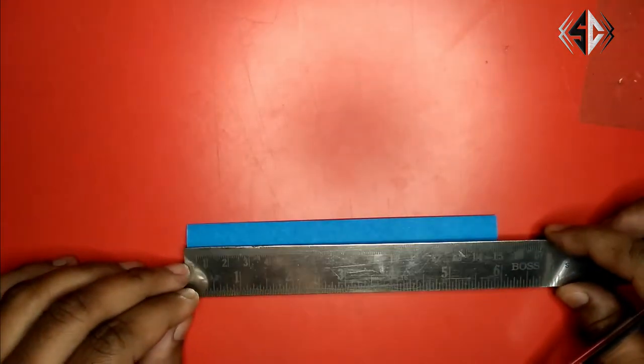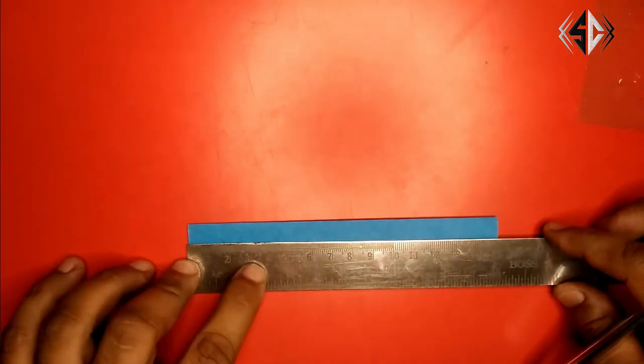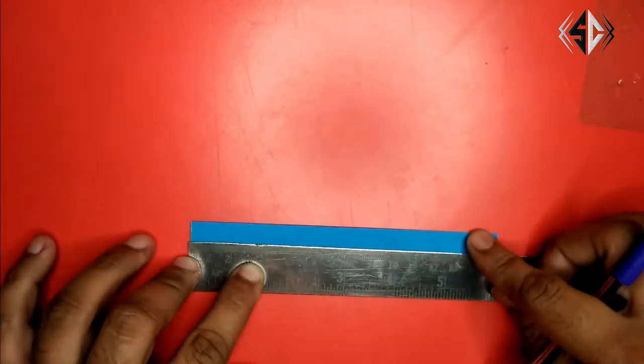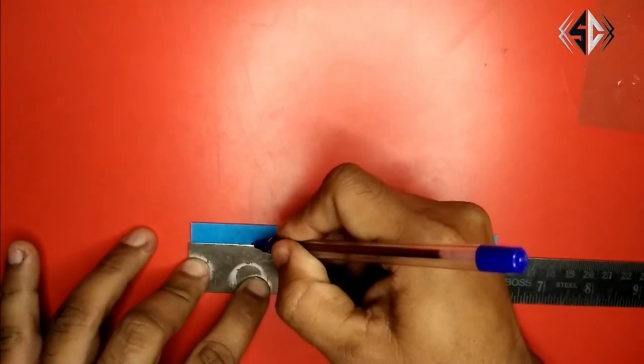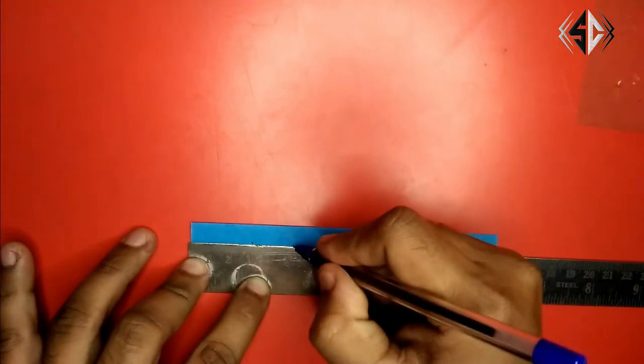With the help of the scale, we will make a mark in the side. We will make a mark at 3 cm and 5 cm.